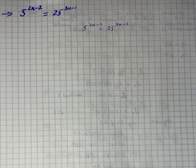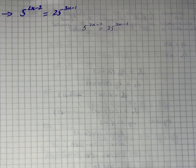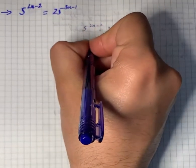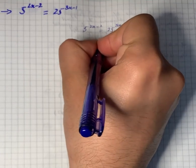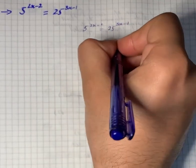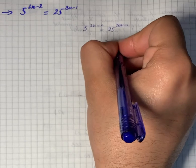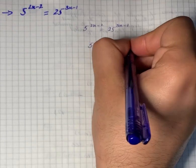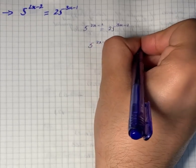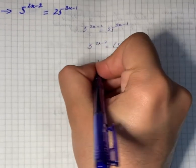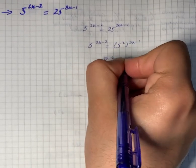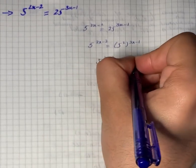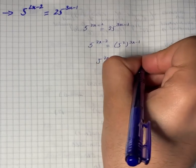Now we will write 25 as 5 raised to power 2 so that each side has the same base. So we can write 5 raised to power 2x minus 2 equals to 5 raised to power 2 into 3x minus 1.